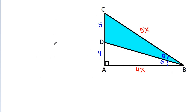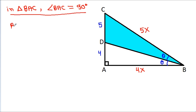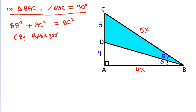And now, in triangle BAC, we have angle BAC equal to 90 degrees. So by Pythagoras theorem, BA squared plus AC squared will be equal to BC squared. And BA is 4X, and AC is 4 plus 5, that is 9.